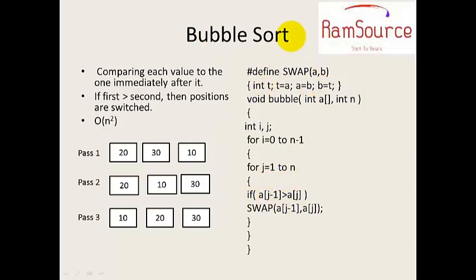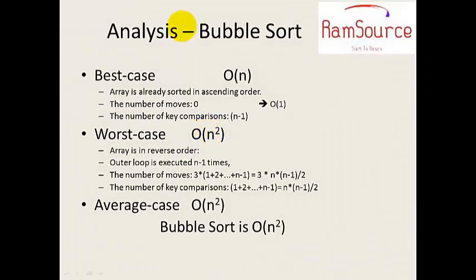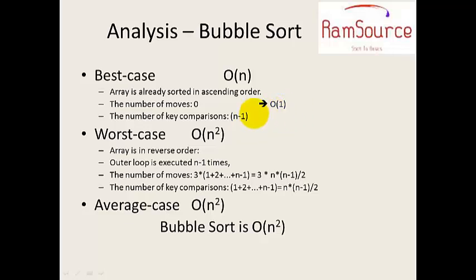This is the bubble sort algorithm. In the best case, for example, if there are no moves — meaning there is only one element — then you write that element directly. If there is no other element, no comparison is needed. For n elements, the number of comparisons is n-1. So in the best case, the complexity is linear — O(n).